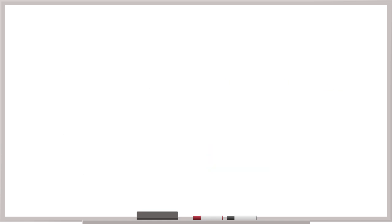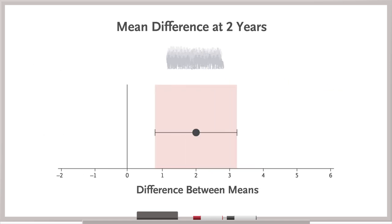With this MCID in mind, you go back to the sample size calculation and see that the trial was powered to detect an even smaller difference.